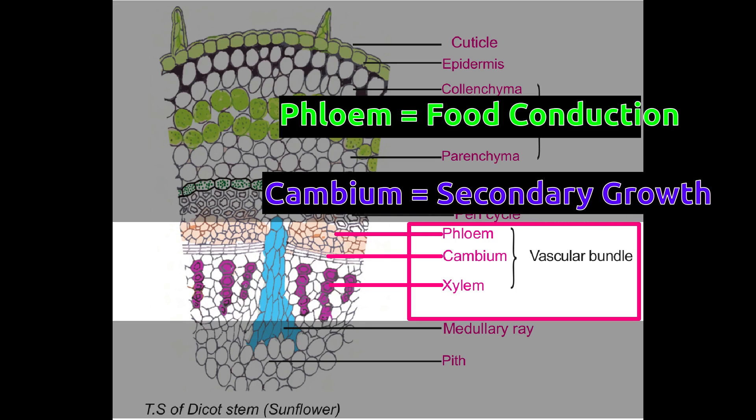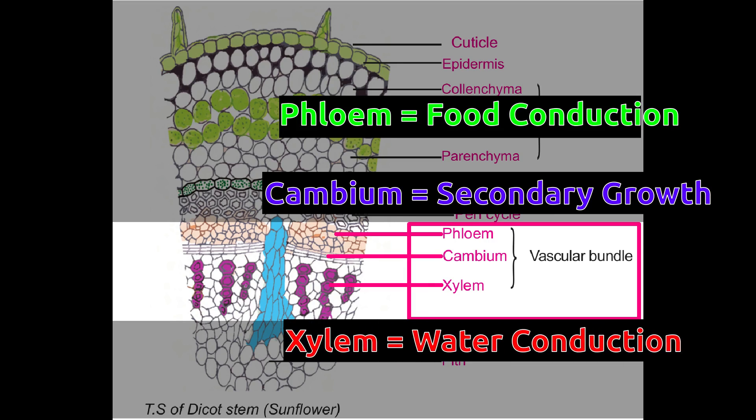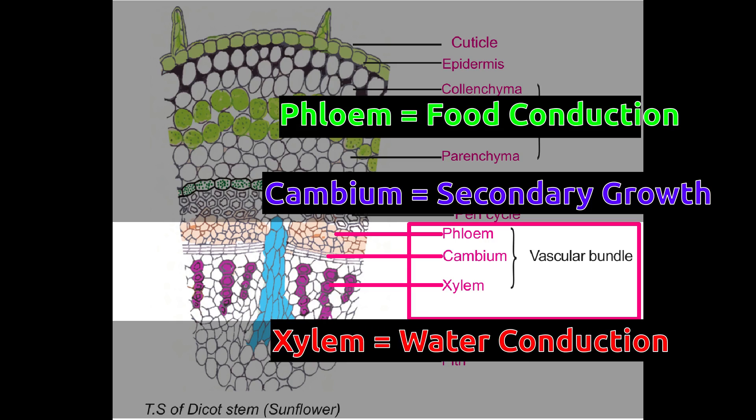Cambium is responsible for secondary growth of plants. It increases the girth of stem. Xylem is the inner part of vascular bundle and conducts water and minerals absorbed by roots to other parts of plant.